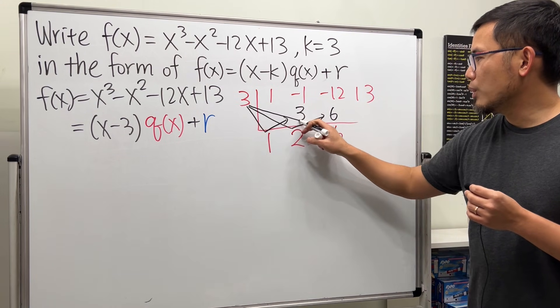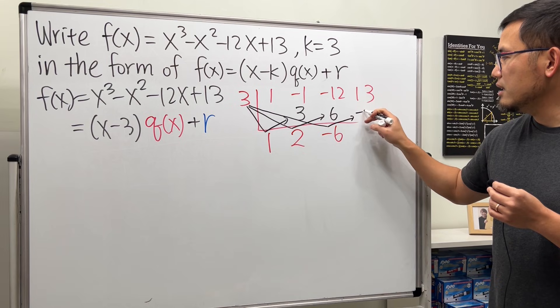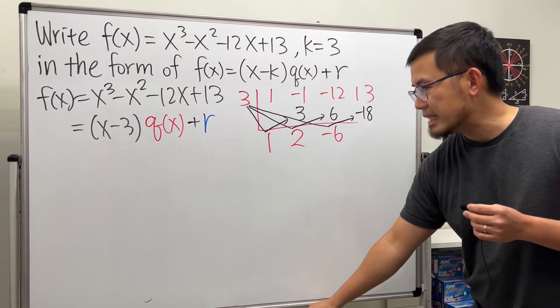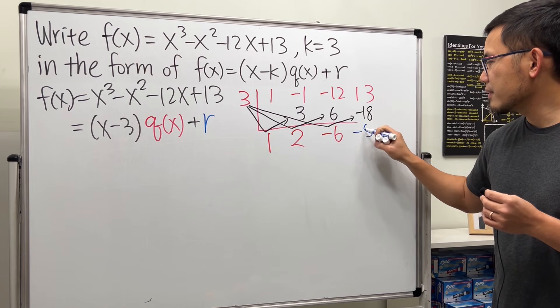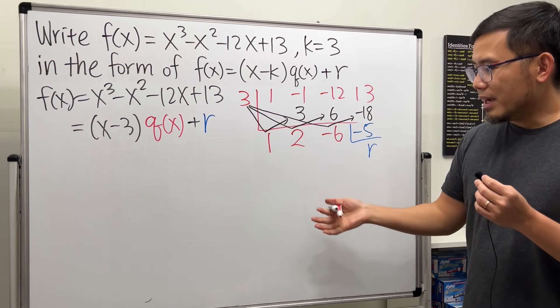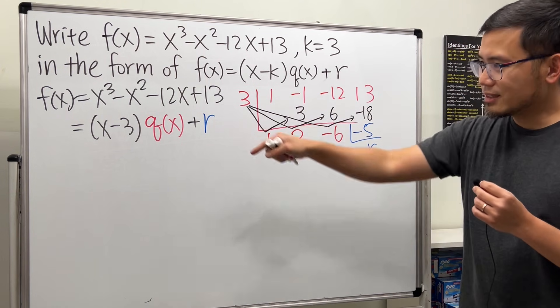Then, do it one more time. 3 times negative 6 is negative 18. And then 13 plus negative 18, we get negative 5. And this right here is the remainder. All right, so how does this work? Well, let's go back here.